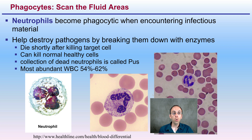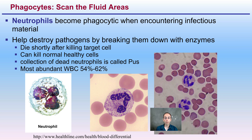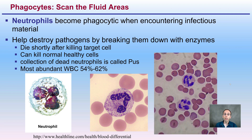We have something called neutrophils, and they become phagocytic when entering infectious material, which is important to help clean up the body and prevent potential infection. They help destroy pathogens by breaking them down with enzymes. Unlike macrophages, neutrophils die shortly after killing the target cell and cannot destroy hundreds.